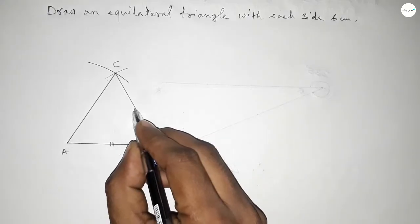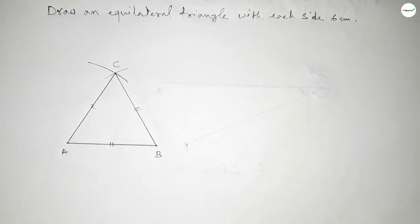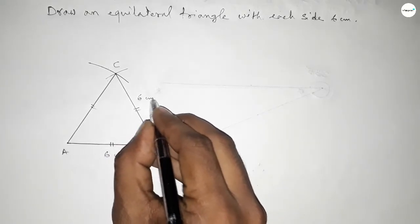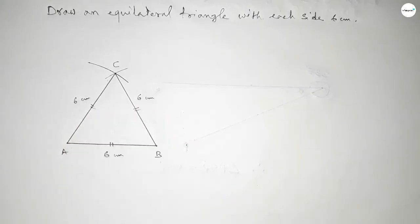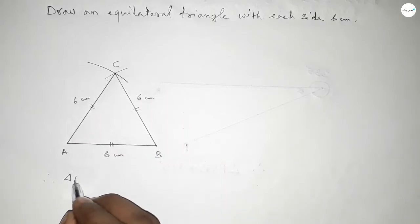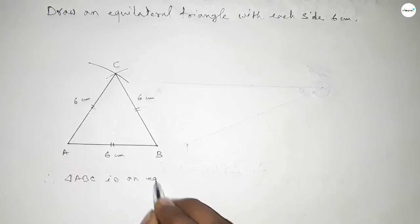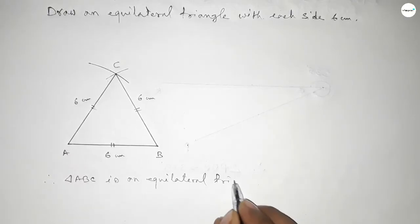This side is 6 centimeters, this is also 6 centimeters, and this is also 6 centimeters. Now marking equal signs on all three sides — this is 6 centimeters, this is also 6 centimeters, and this is also 6 centimeters.